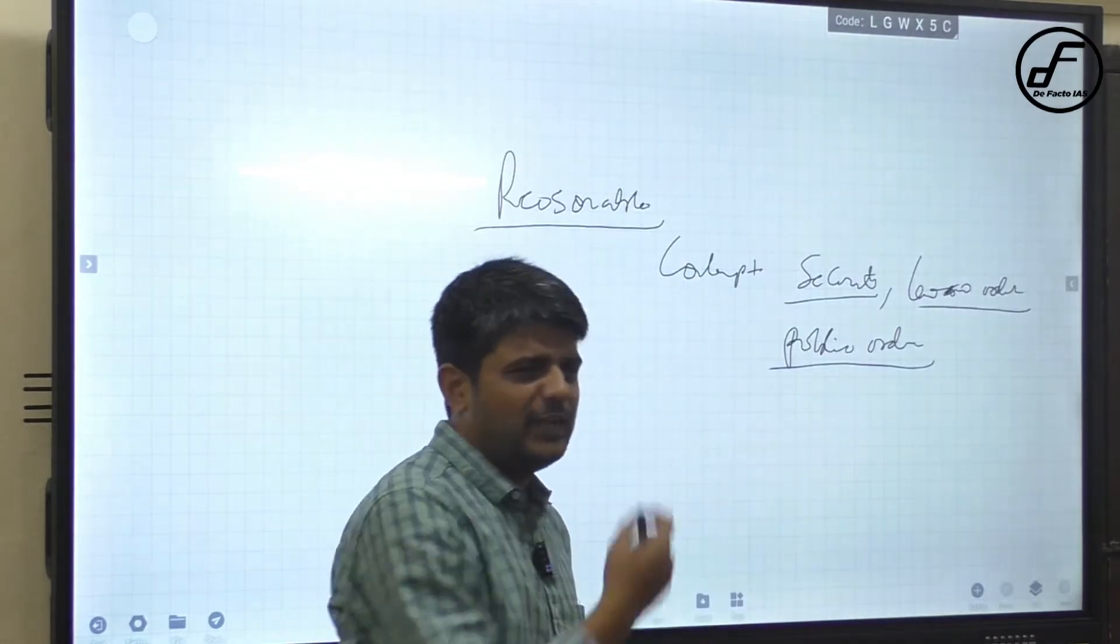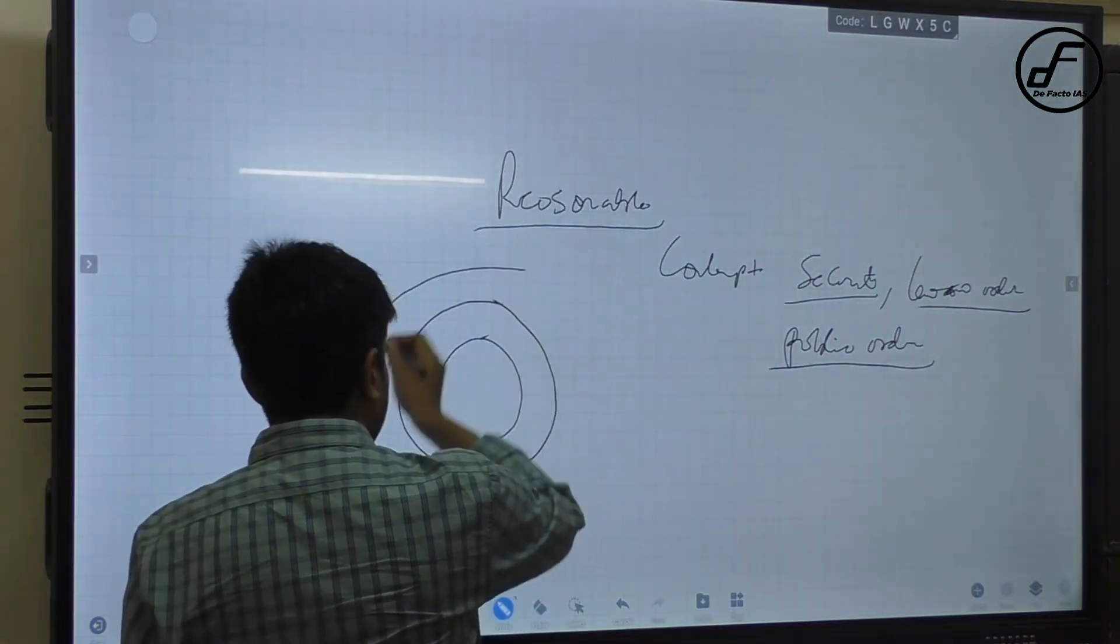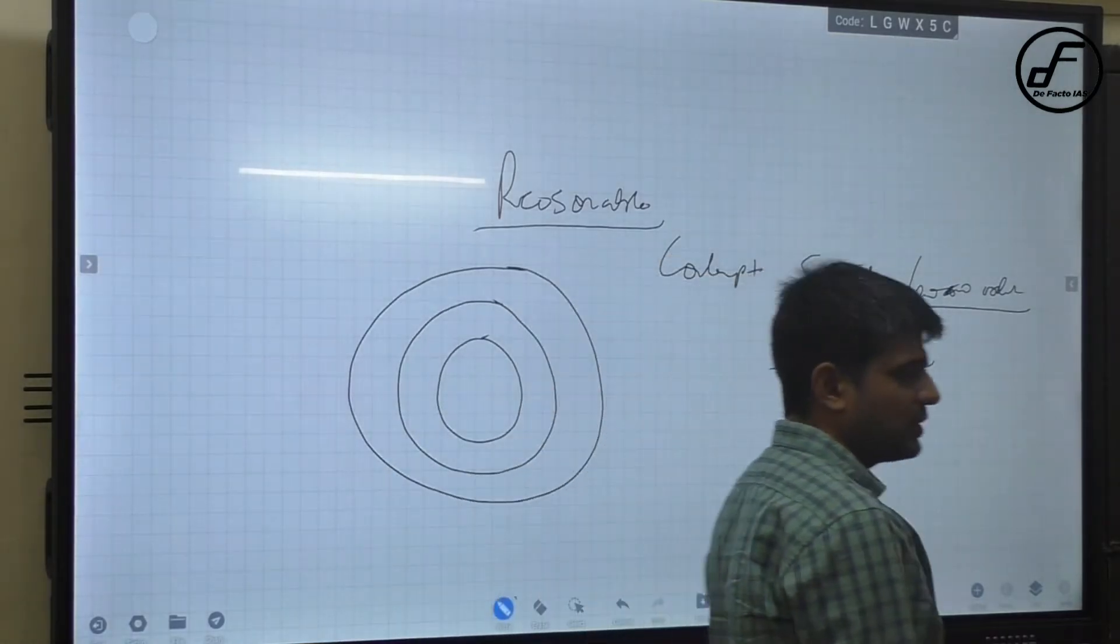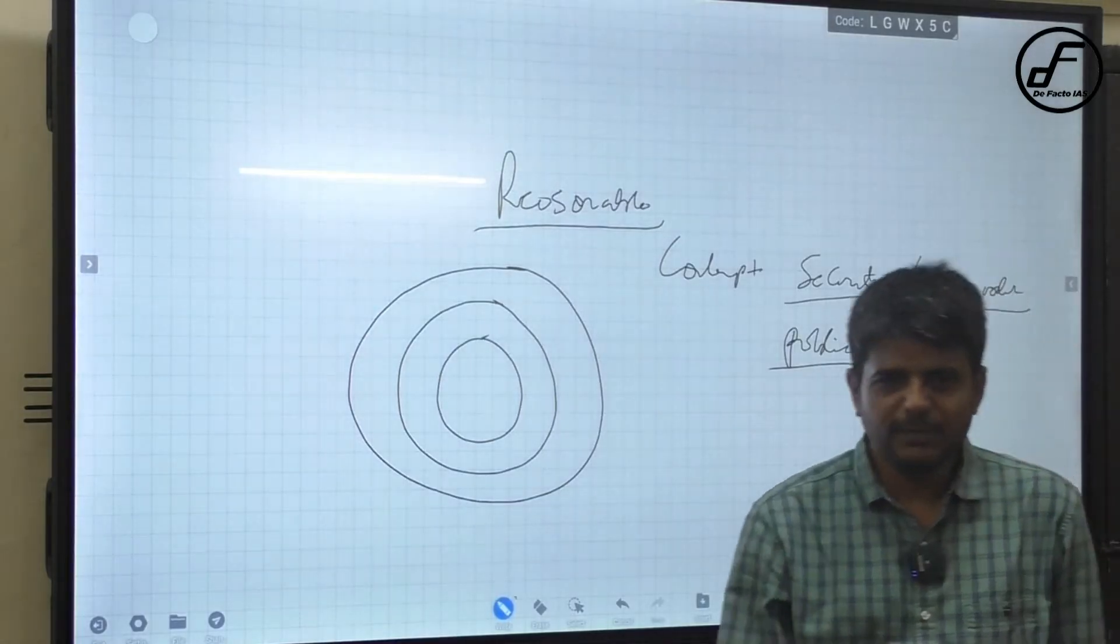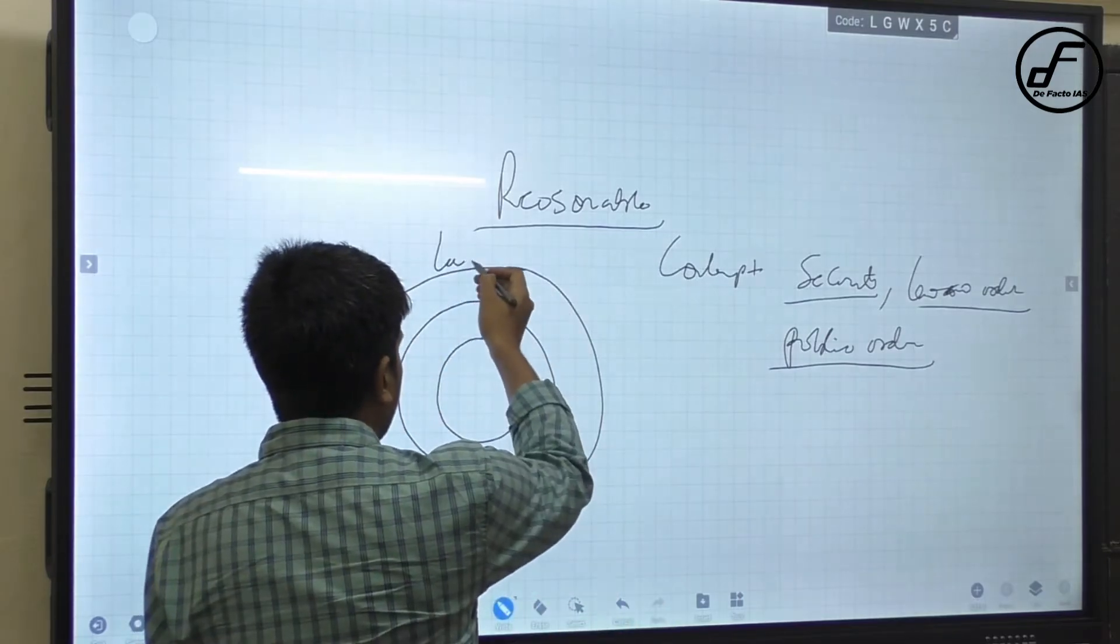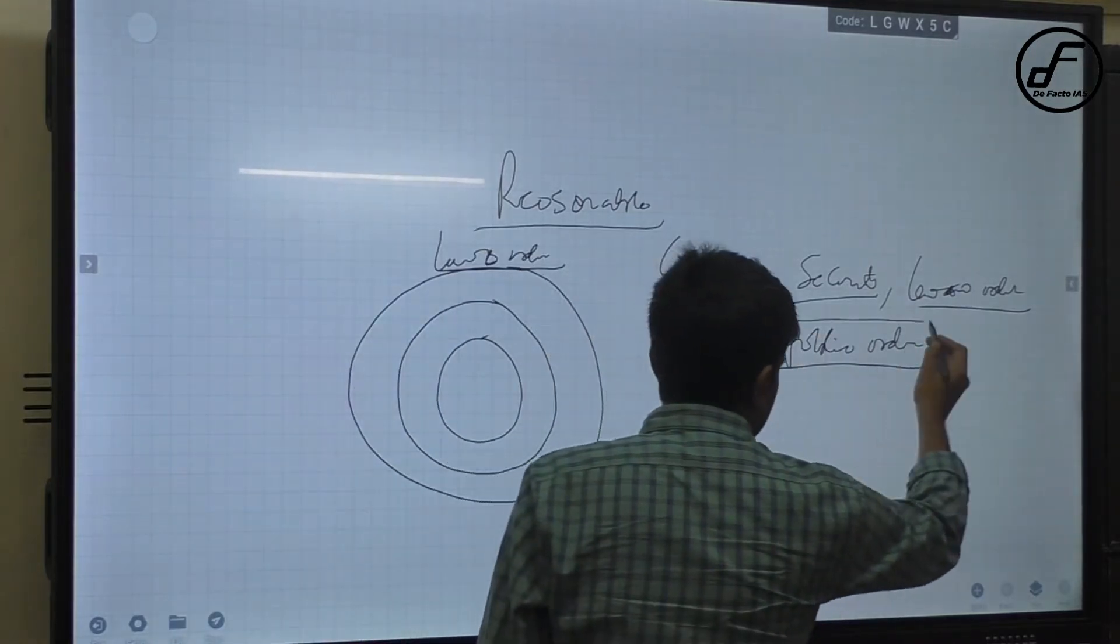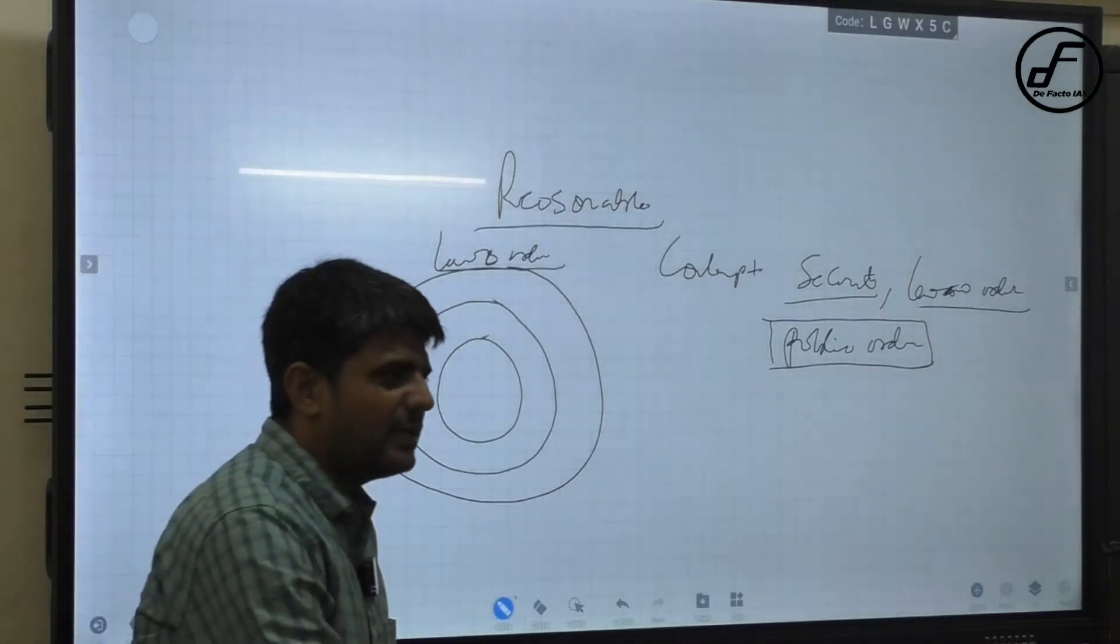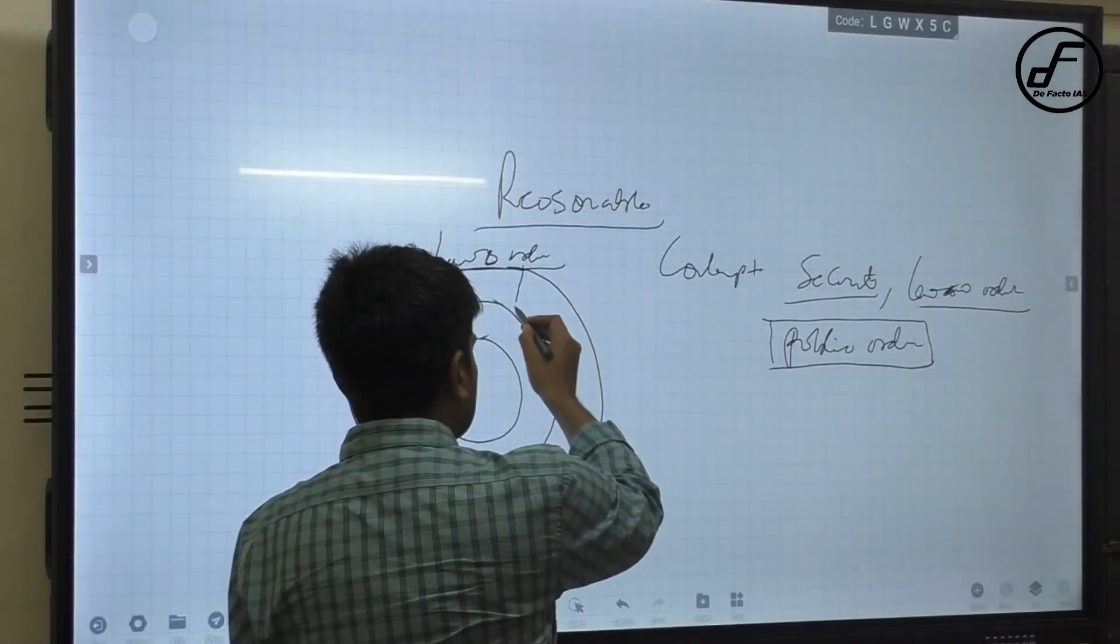The court very beautifully explained this can be understood as a concentric circle. There might be a situation where people are fighting among each other, some sort of violence, but that violence is still at the stage of law and order. As soon as the general public starts to be inconvenienced and their life and liberty is starting to get affected, the question becomes grave and becomes a public order issue.